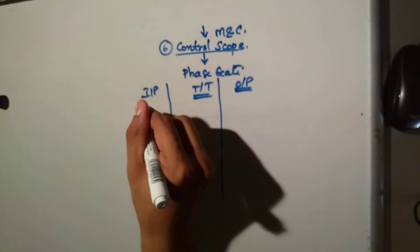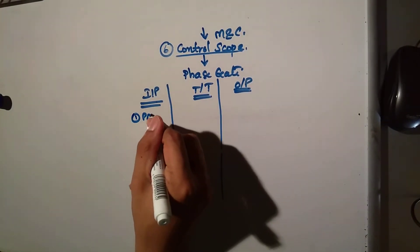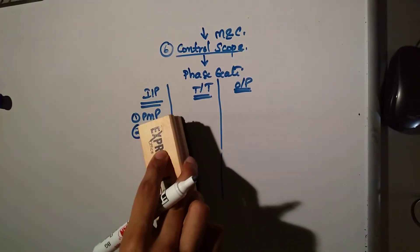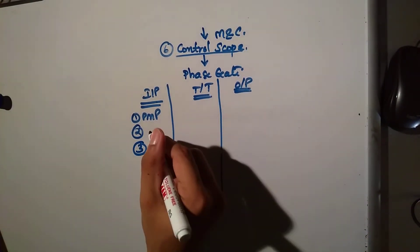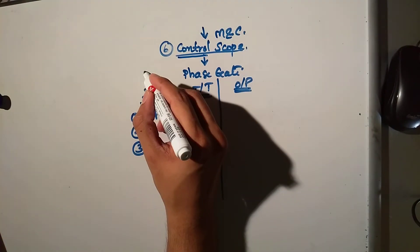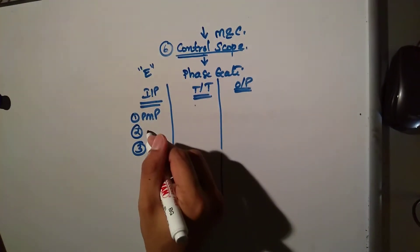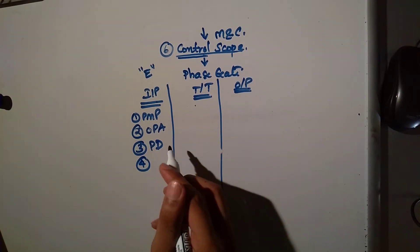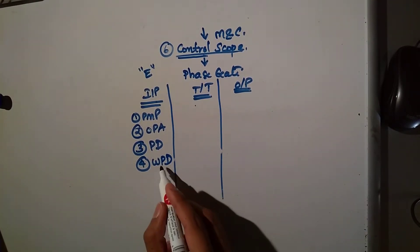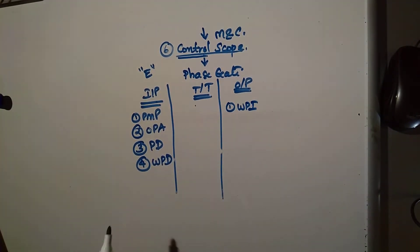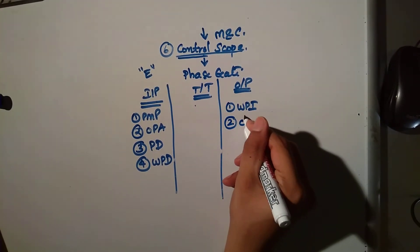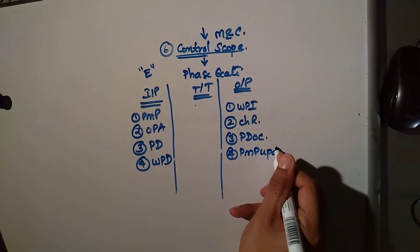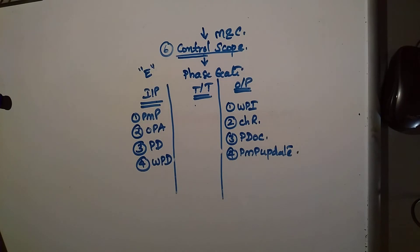We are comparing the project management plan — what we planned — with the work performance data, which is the deliverable output after execution. In this control process there is no expert judgment and no EEF. The inputs are project management plan, work performance data, OPA — organizational process assets — and project documents. Work performance data becomes work performance information. If not equal, you raise a change request, project document update, and project management plan update. The tool is data analysis.